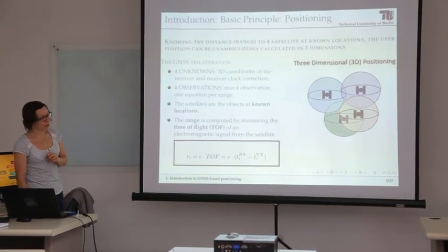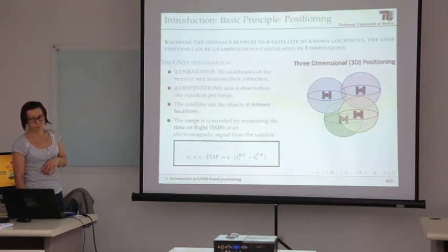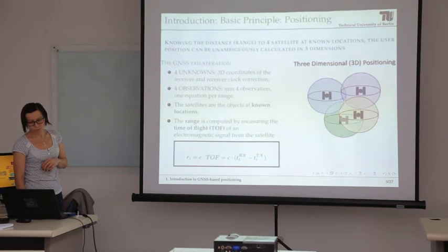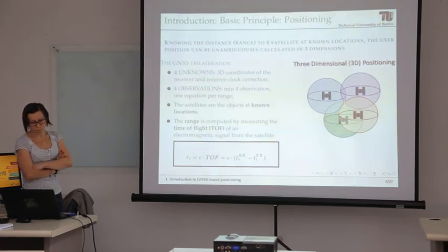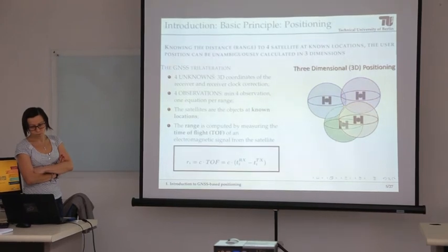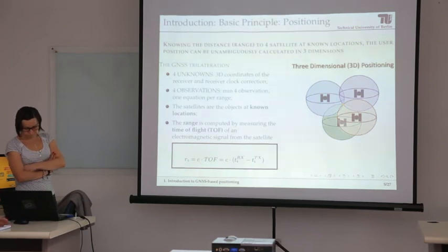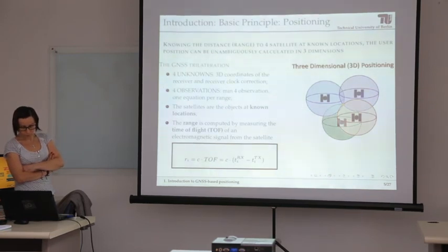The satellite positioning method is based on the concept of trilateration. It is necessary to resolve four unknowns: three related to the receiver's position and a fourth related to clock correction. Although satellites on board have very high precision atomic clocks, the ground receivers have very low precision clocks — normally quartz — so the clock error of the receiver is the fourth unknown to be solved.